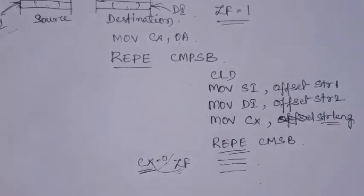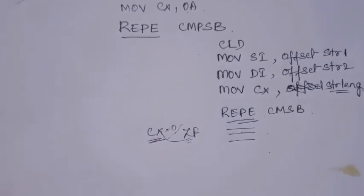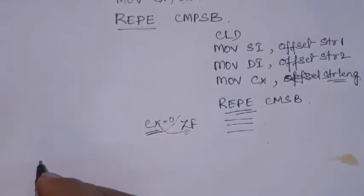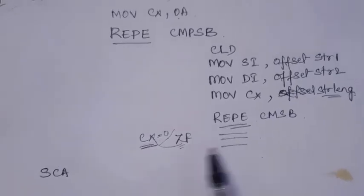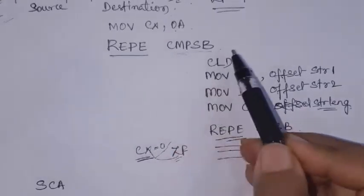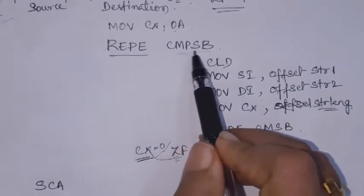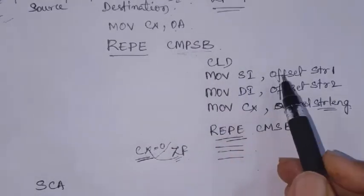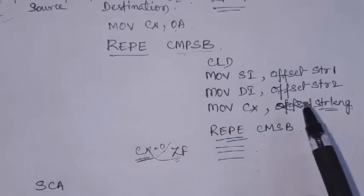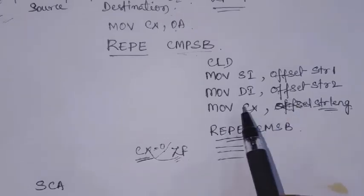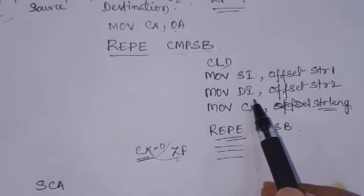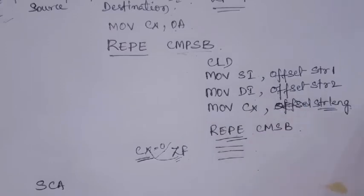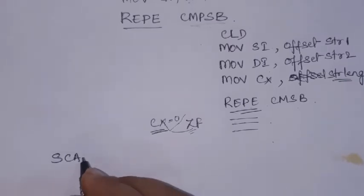This was about Compare String Byte. For Compare String Word, one word of source is compared with one word of destination, flags are affected, and SI and DI contents are automatically incremented by 2 to point to the next word.